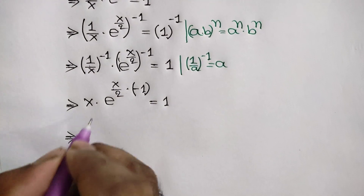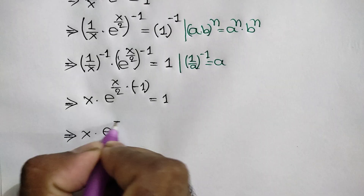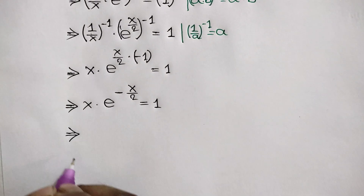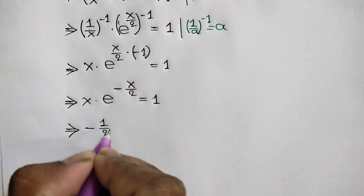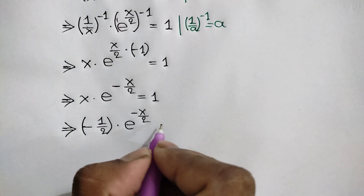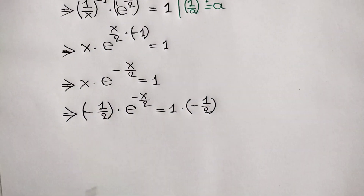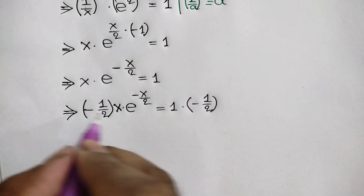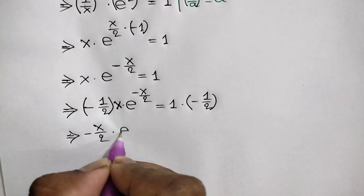So x times e to the power negative x over 2 is equal to 1. Now multiplying both sides by negative half, we get negative half times x is negative x over 2, so negative x over 2 times e to the power negative x over 2 is equal to negative half.